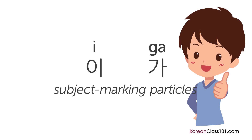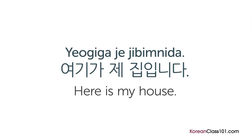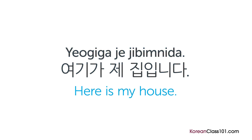Let's do some examples so you can learn how to use the subject marking particles correctly. Let's use 여기가 제 집입니다, meaning 'here's my house,' as an example. In this sentence, we use the subject marking particle 가 next to the noun 여기, meaning 'here,' to mark 여기 as the subject of this sentence.